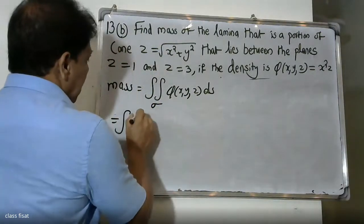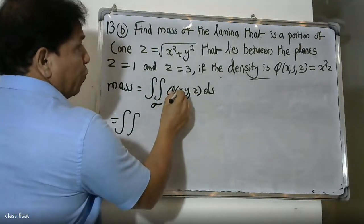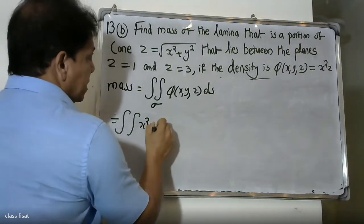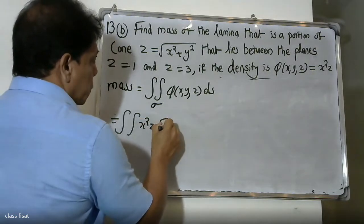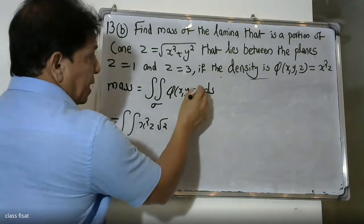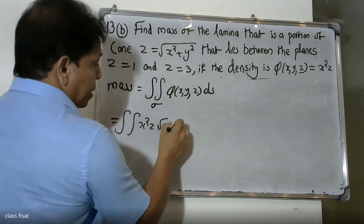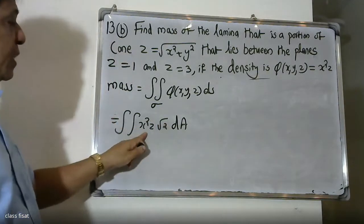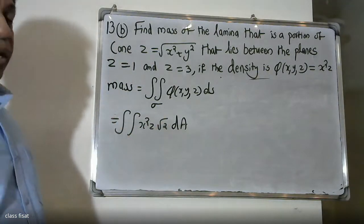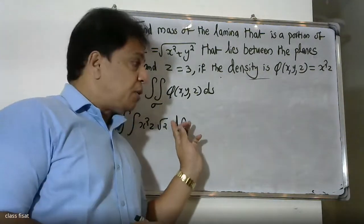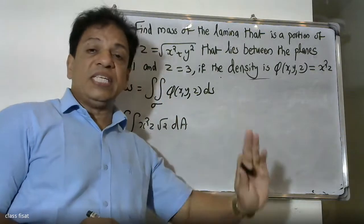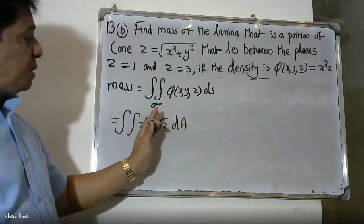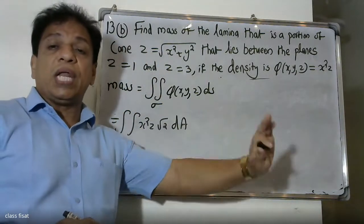Therefore, the mass integral becomes the double integral of φ(x, y, z) · √2 dA, which equals ∬ x² · √2 dA. We need to integrate over the appropriate region D and will use polar coordinates.